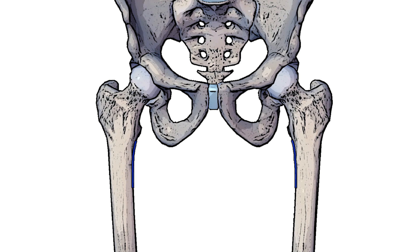Next let's take a look at the insertion of the pectineus muscle, and that's going to be on the pectineal line of the femur. The pectineal line of the femur sits just below the lesser trochanter of the femur. I'm highlighting here on each side the lesser trochanter of the femur — that's a little bit of bone which sticks out on the medial side — and you've got the greater trochanter of the femur on the lateral side. A good way to remember where the pectineal line of the femur is: if you remember where the lesser trochanter is, it's just below it.